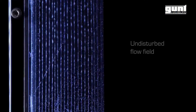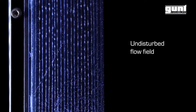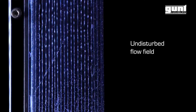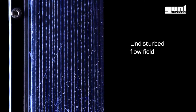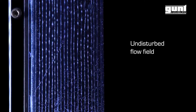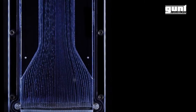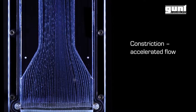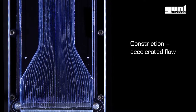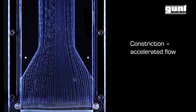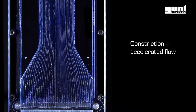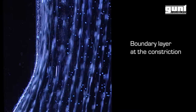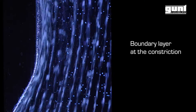This clip here for instance shows the undisturbed streamlines for a constant cross-section. Here we have the streamlines for accelerated flow through a reduction in cross-section. And this clip shows the separation of the boundary layer.